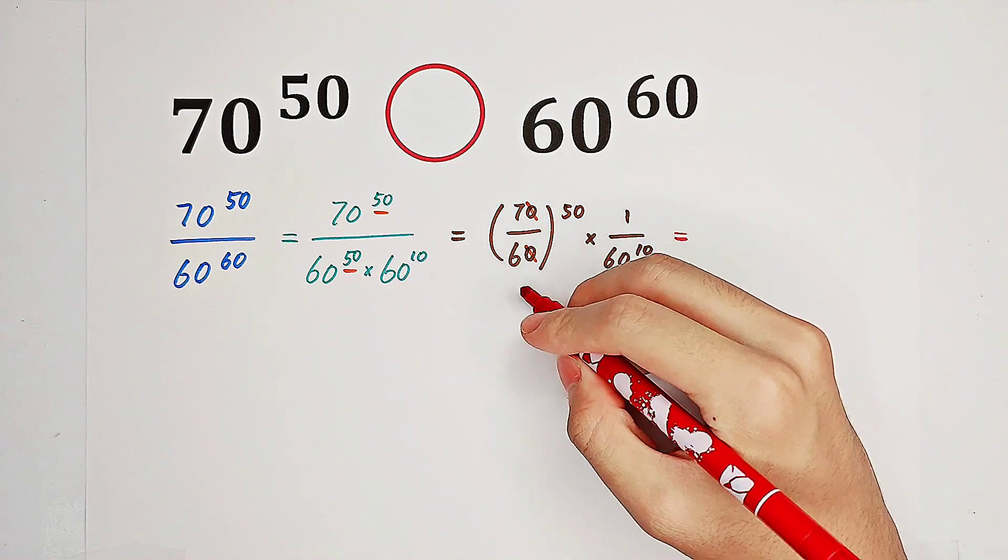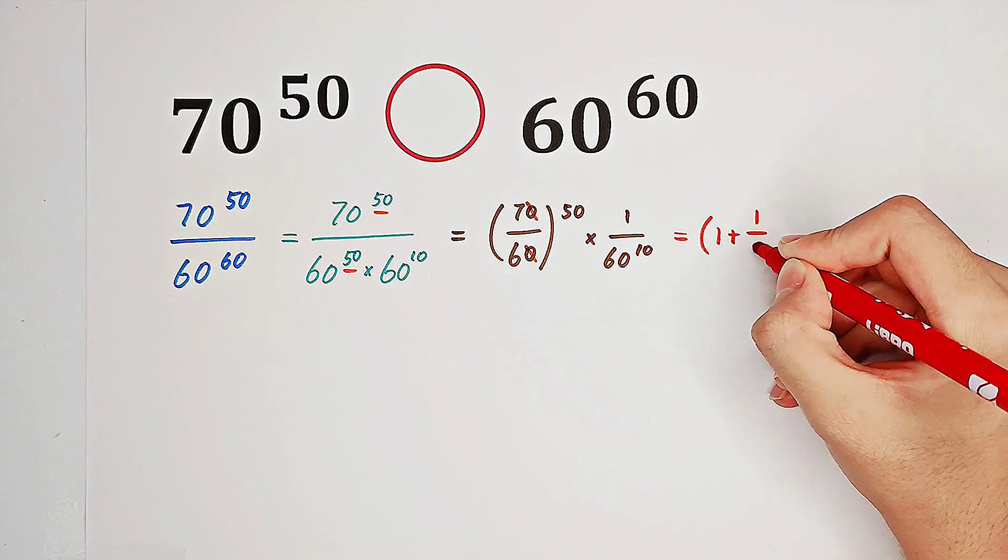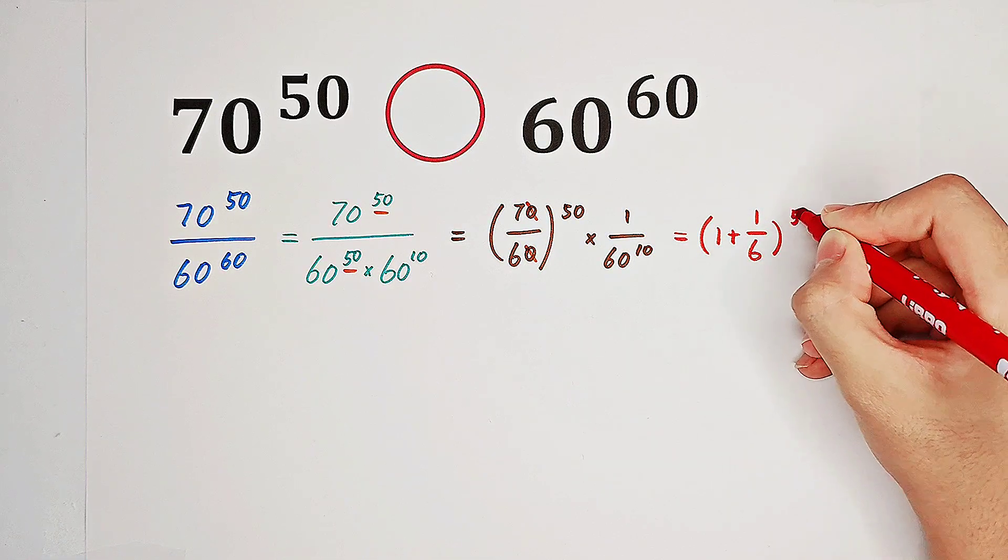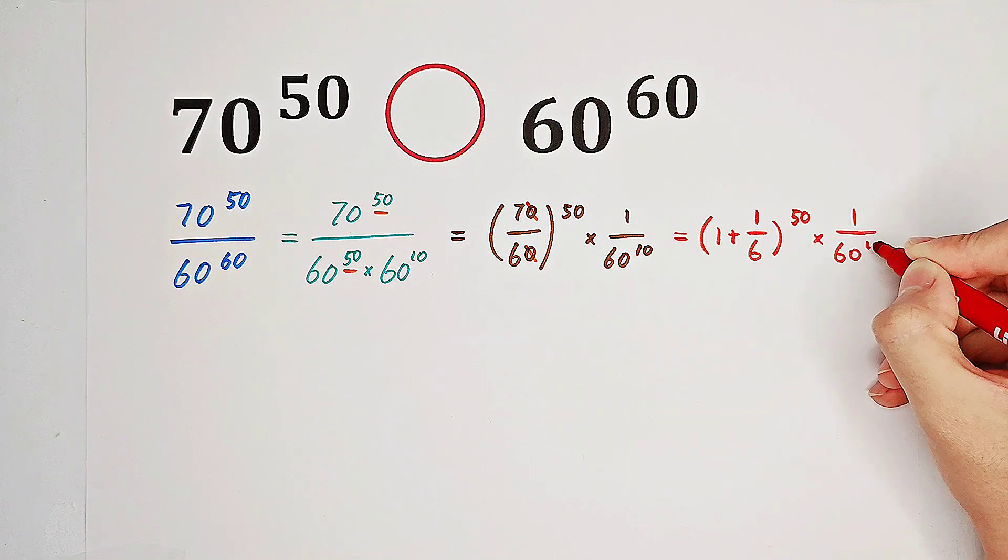Of course, 7 over 6 can also be written as 1 plus 1 over 6. So it's going to look like this.